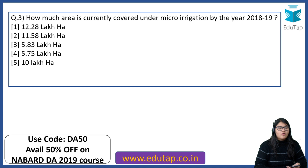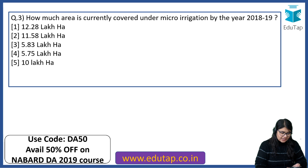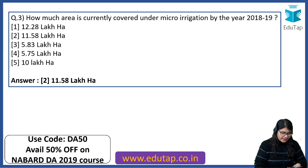Moving forward: how much area is currently covered under micro irrigation by the year 2018-19? Options are 12.28, 11.58, 5.83, 5.75, or 10 lakh hectares. I'll give you one or two seconds and then flip the question. The right answer is 11.58 lakh hectares.